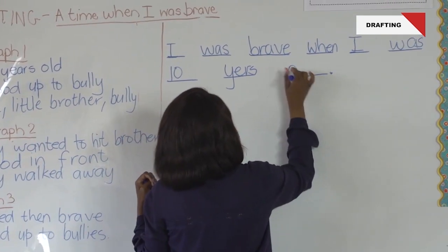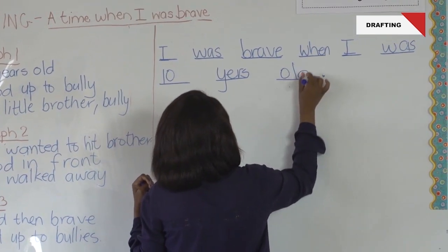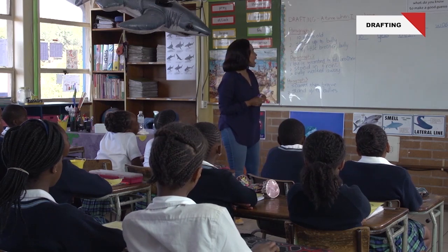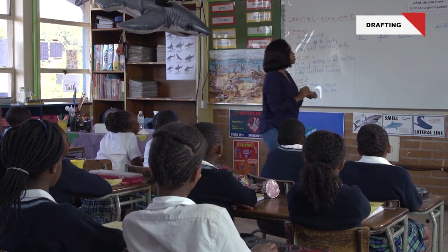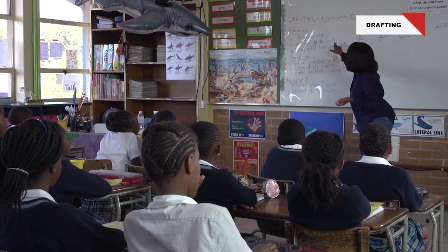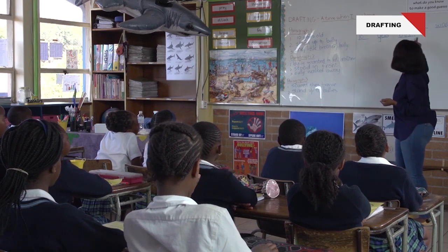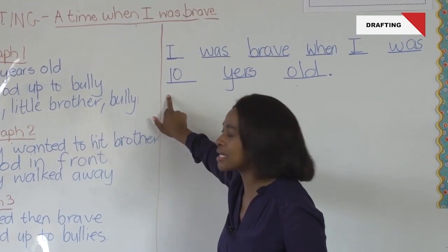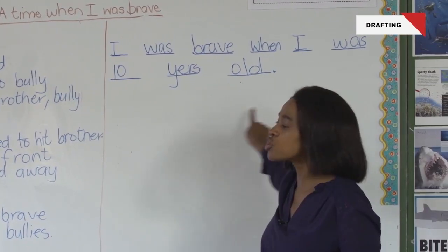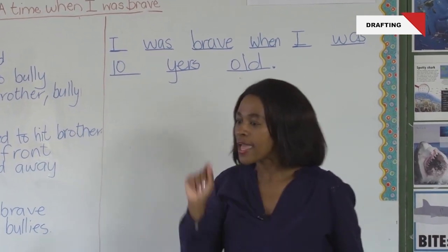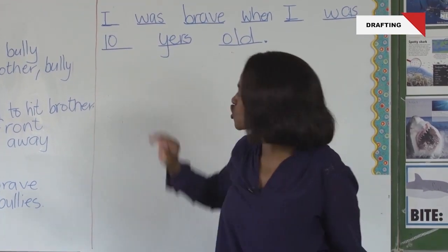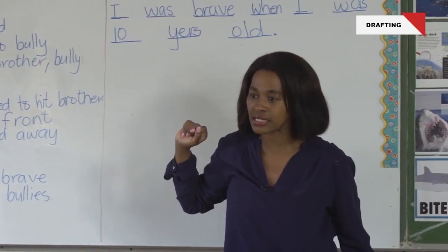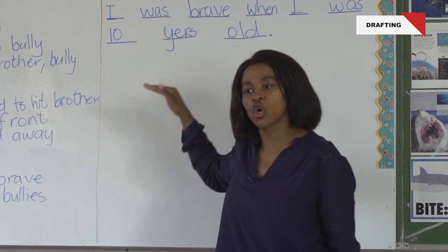'I was brave when I was 10 years old.' When I start my second sentence, I will start it from here — I will not come and start it from the beginning. I will continue and end it here with a full stop. Until I am done with paragraph one, then I skip a line to go to paragraph two.